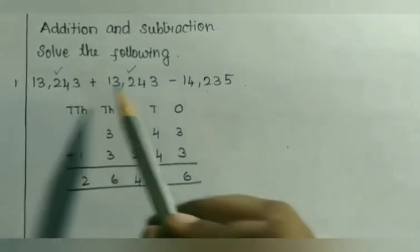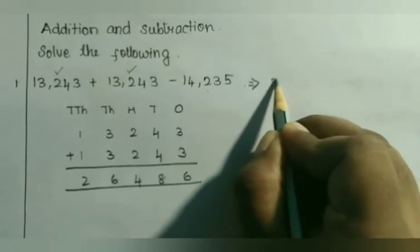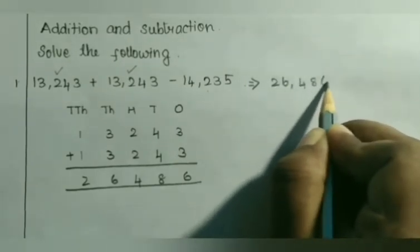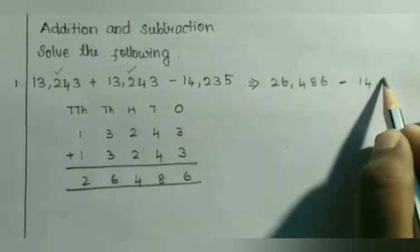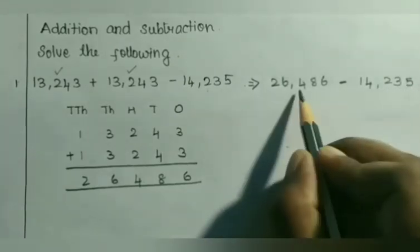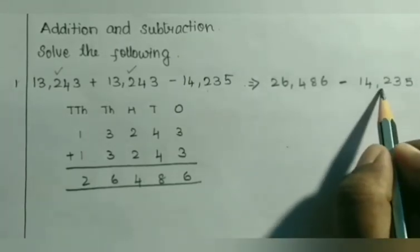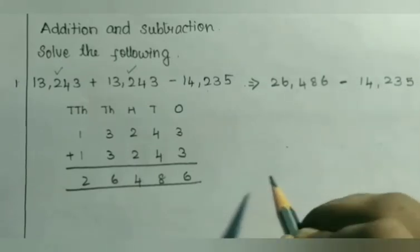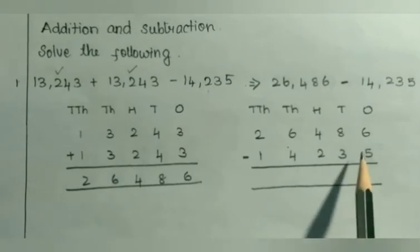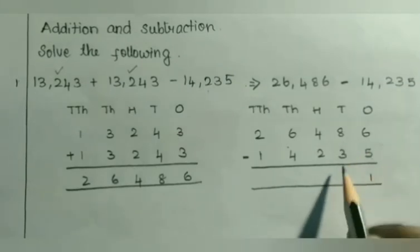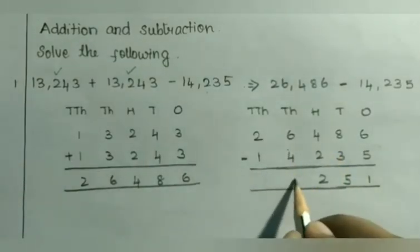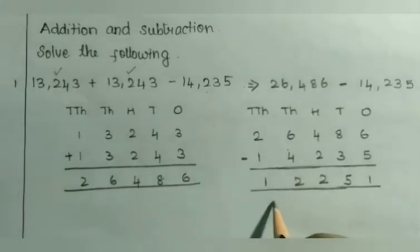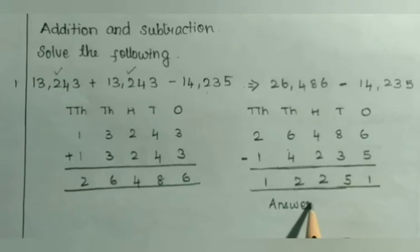Now we got the sum of these two numbers. The question changes to 26,486 minus 14,235. So 26,486 becomes the minuend and 14,235 becomes the subtrahend. Let us write these two in columns and find the difference from the 1's position: 6 minus 5 is 1, 8 minus 3 is 5, 4 minus 2 is 2, 6 minus 4 is 2, 2 minus 1 is 1. So the answer is 12,251.